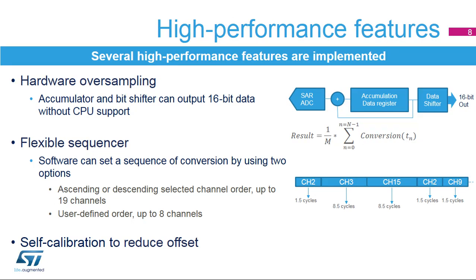The ADC includes oversampling hardware which accumulates data and then divides without CPU help. The oversampler can accommodate from 2 to 256 time samples and right-shift from 1 to 8 binary digits. The sequencer allows the user to convert either up to 19 channels in ascending or descending order, or up to 8 channels in a user-defined order.